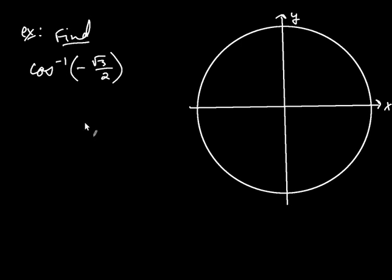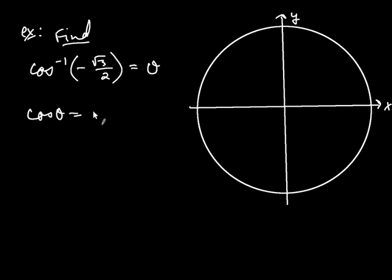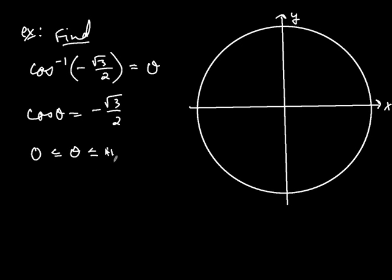Let's try some examples. We're asked to find inverse cosine of negative root 3 over 2. The output of inverse cosine is an angle — this is really an angle in disguise. This is the same thought as: cosine of the angle equals negative root 3 over 2. And because we're dealing with inverse cosine, that angle also has to lie between 0 and pi. So you're looking for an angle satisfying both requirements.